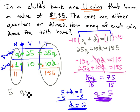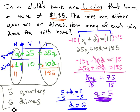The child has 5 quarters and 6 dimes, which will have a total value of $1.85. We made two equations to represent this problem by organizing the number of coins, the value of the coins, and multiplying to get the total of the coins. We then simply had to decide where the total numbers went. 11 was a number, and 185 was a total.